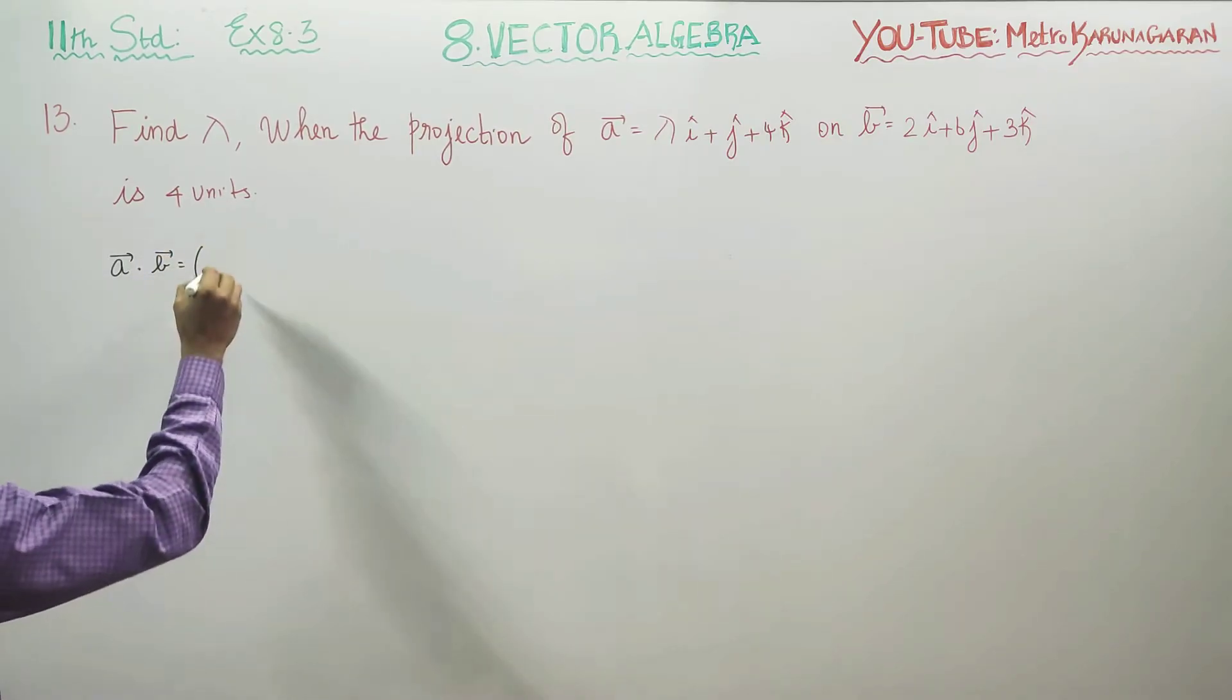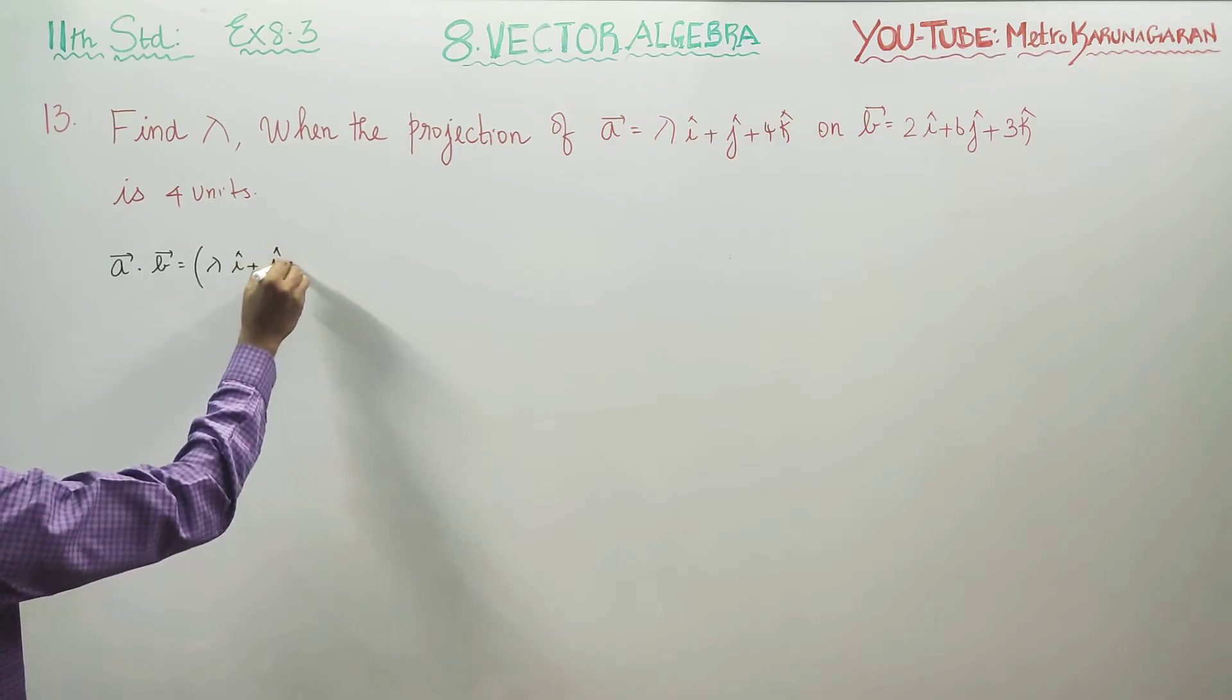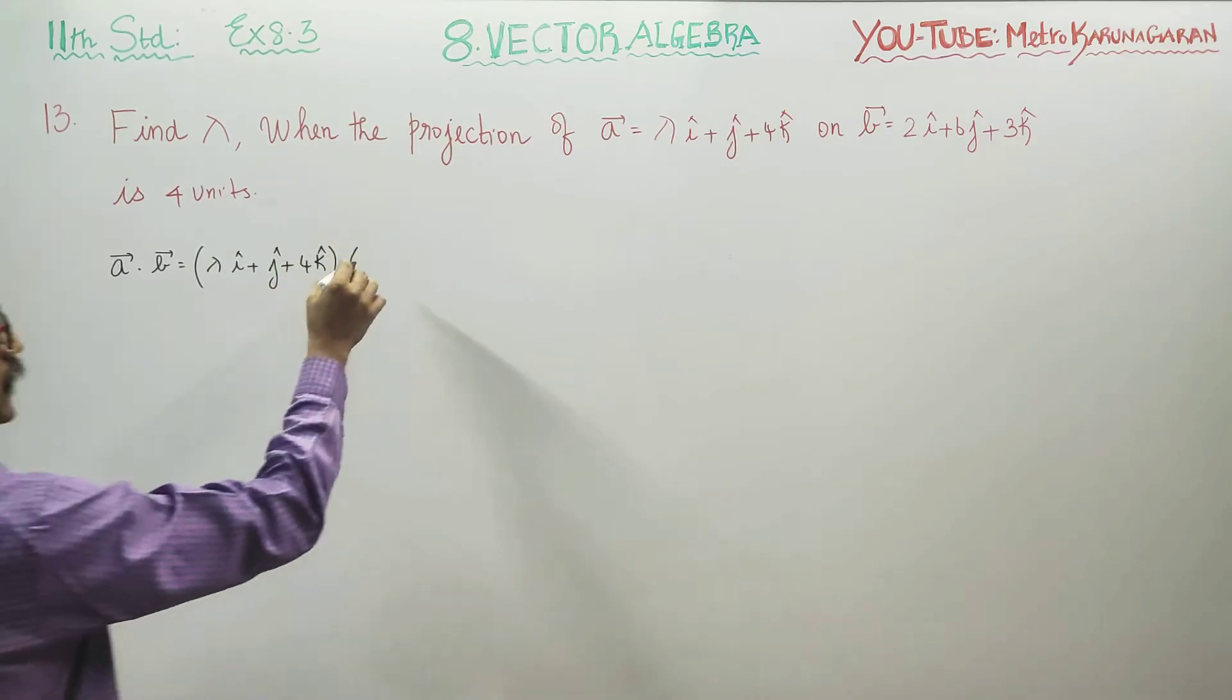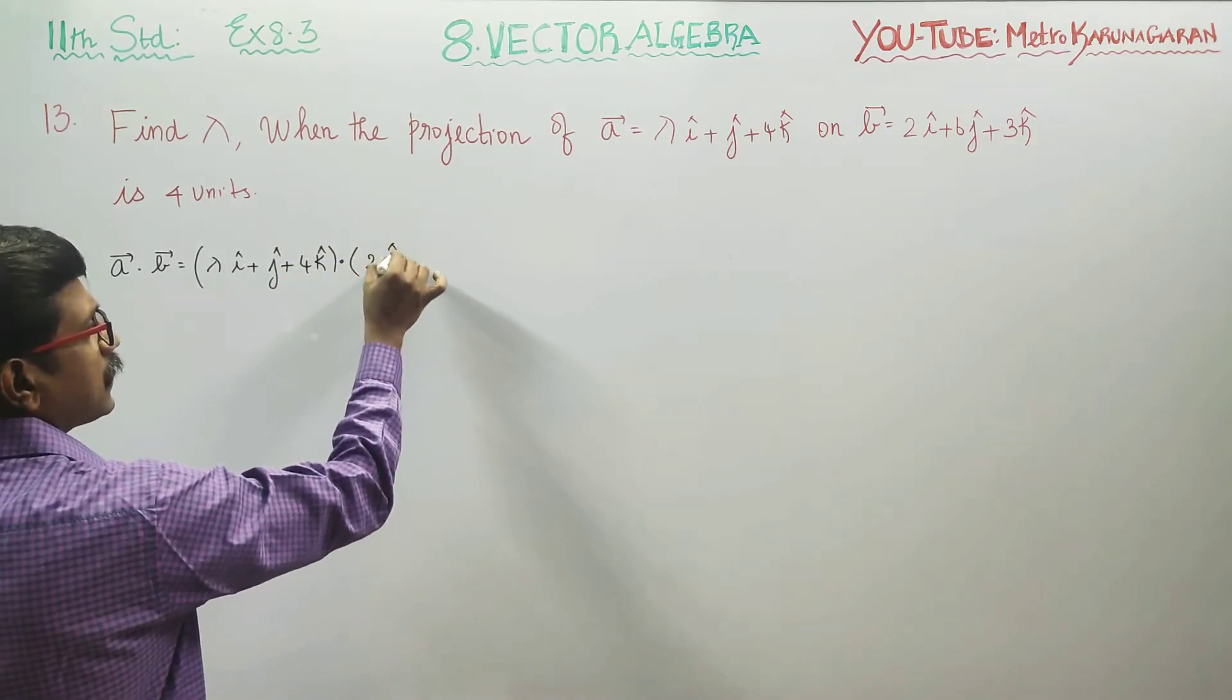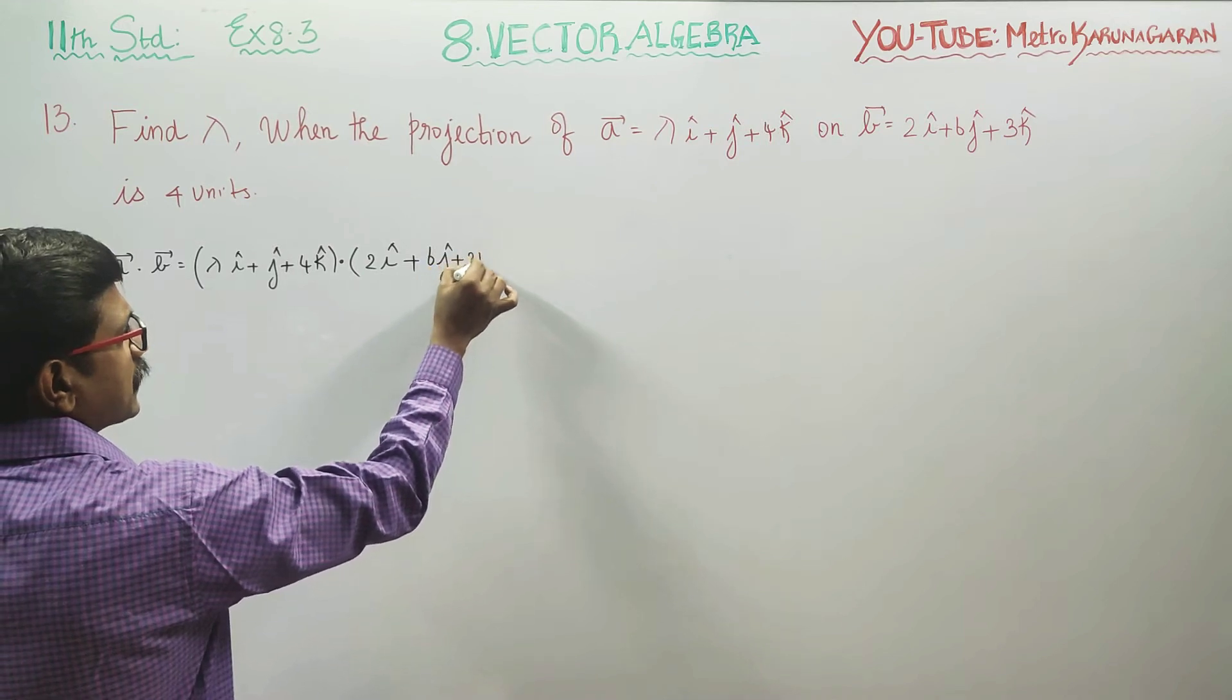A vector is lambda I vector plus J vector plus 4K vector. B vector is 2I vector plus 6J vector plus 3K vector.